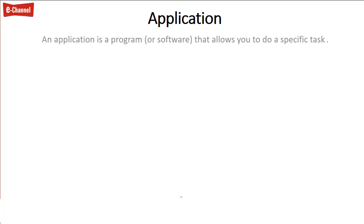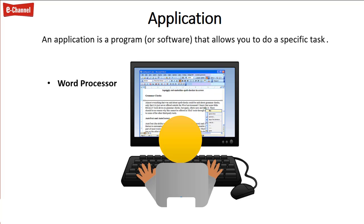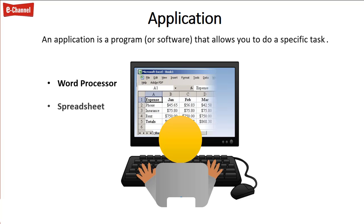An application is a program or software that allows you to do a specific task. For example, you can create and edit a document with a word processing program, or make a budget with a spreadsheet application.